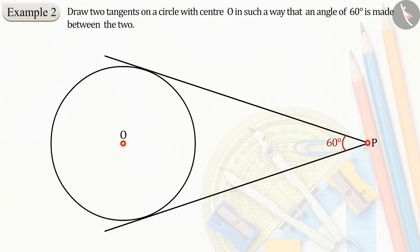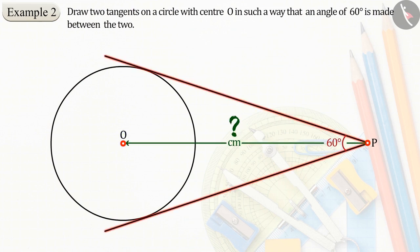Like every question, in this question also we have a circle and know about its center. But in this question, we have not been told the distance between the outer point and the center of the circle. But the angle formed between the tangent lines is described. Come, let's see how we can solve this type of question.